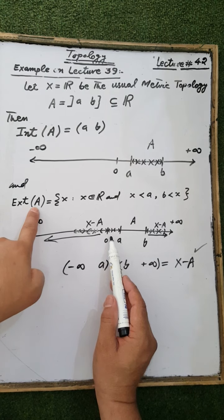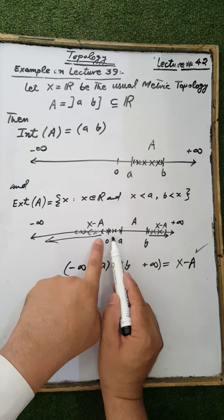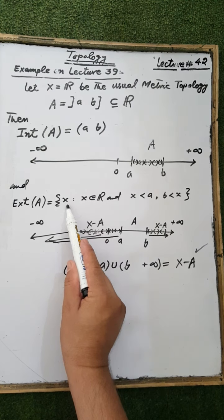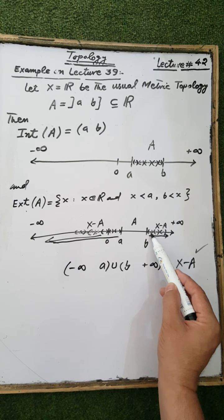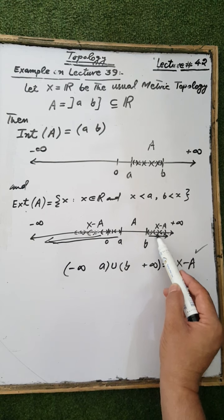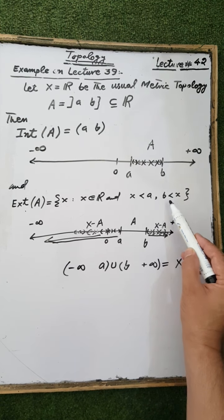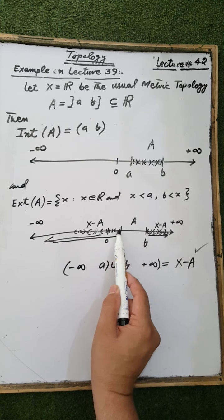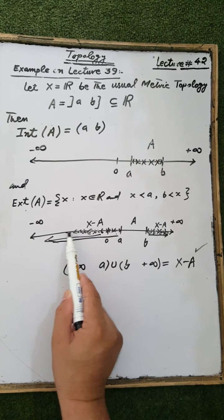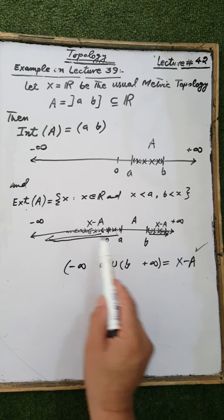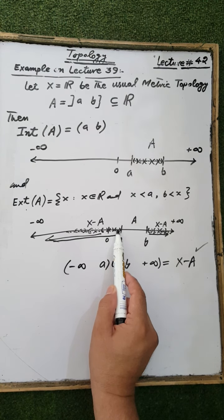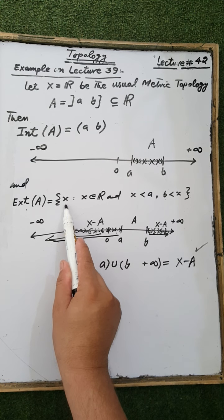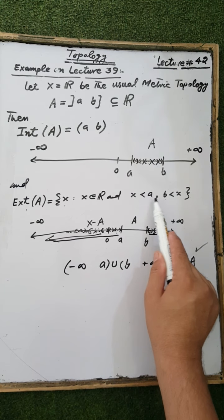Therefore, the exterior set of A consists of those elements x such that x is less than a or x is greater than b. For each element greater than b or less than a, there exists an open interval contained in the complement of A, because open sets in ℝ are in the form of open intervals. Therefore the exterior set of A contains those elements x which satisfy x less than a or x greater than b.